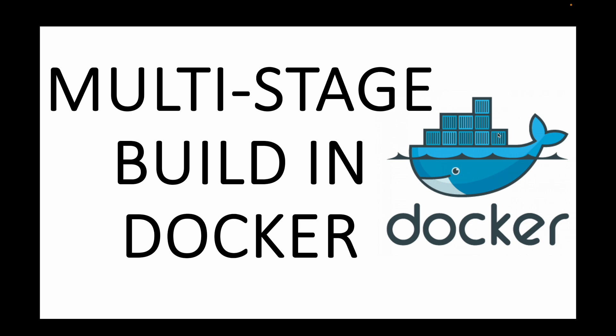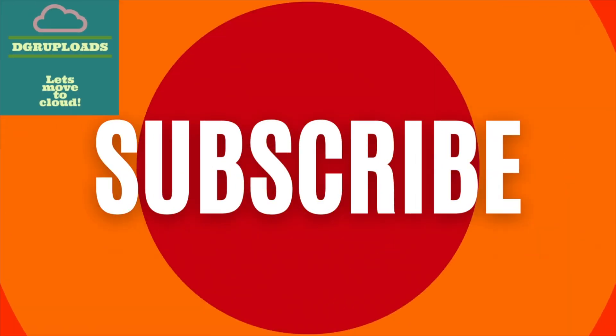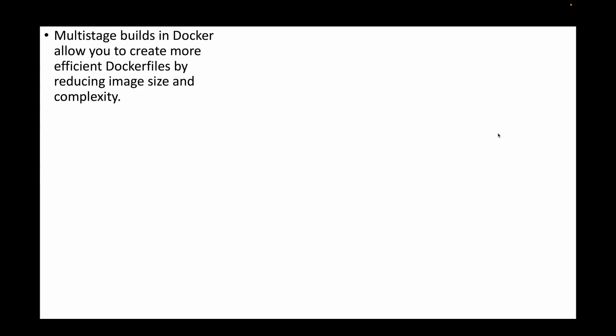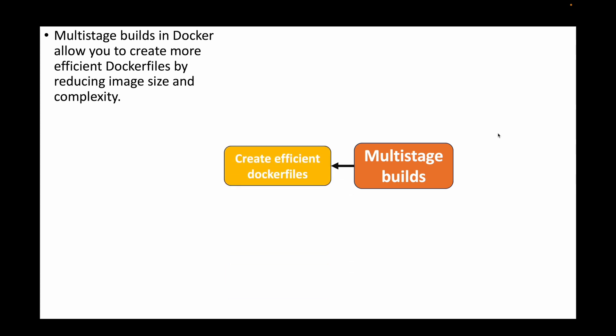In this session we will understand what multi-stage build is and look at an example of how to create one. Generally, multi-stage builds are used when you want to create very efficient Dockerfiles and have a minimal image size — that is, you want to reduce the overall size and complexity of your Docker image. Whenever you want to do that, you can implement a multi-stage build.